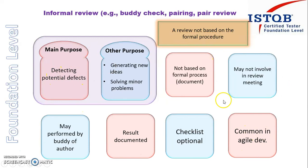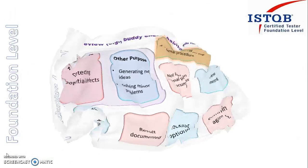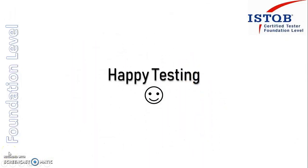So to summarize informal review: the main purpose is to detect defects; other purposes are to generate new ideas and solve minor problems. There is no formal document or review meeting. It is performed by a person sitting near you. Results are optionally documented, checklist is optional, and it is quite popular in agile development. That's it for informal review — see you in the next video. Until then, happy testing.